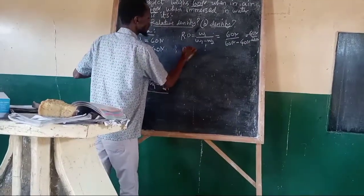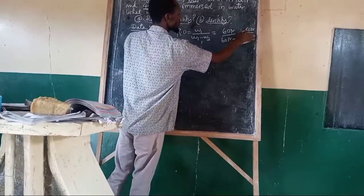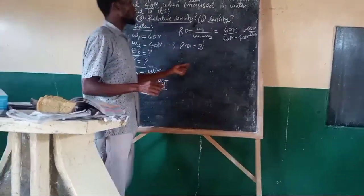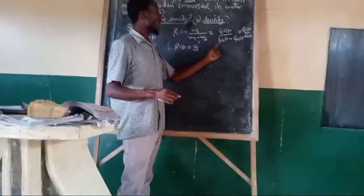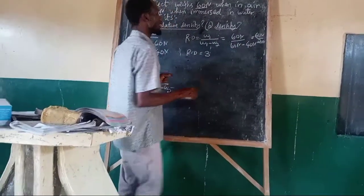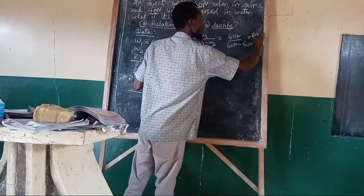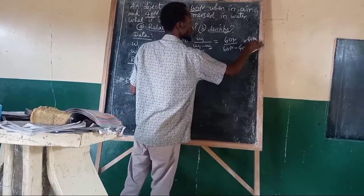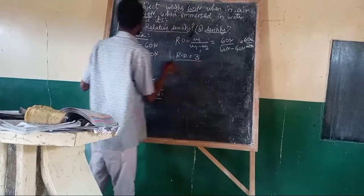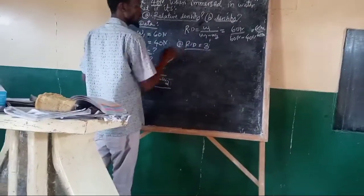Therefore, relative density is equal to 60 divided by 20, which is equal to 3. By using this concept, we can definitely determine relative density. Relative density has no unit, because the units cancel out.